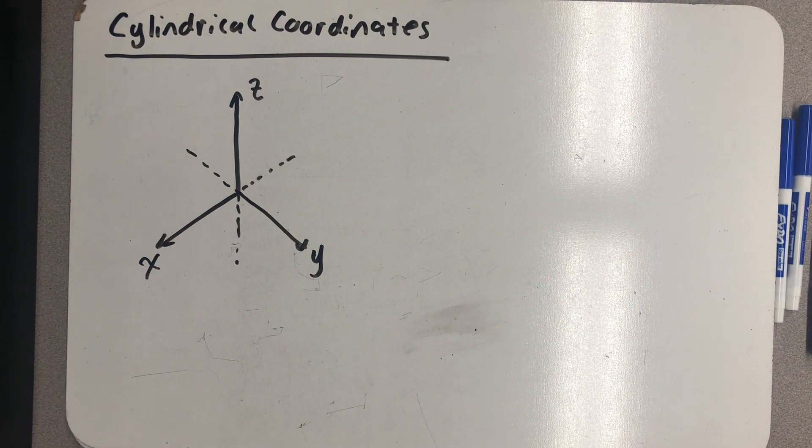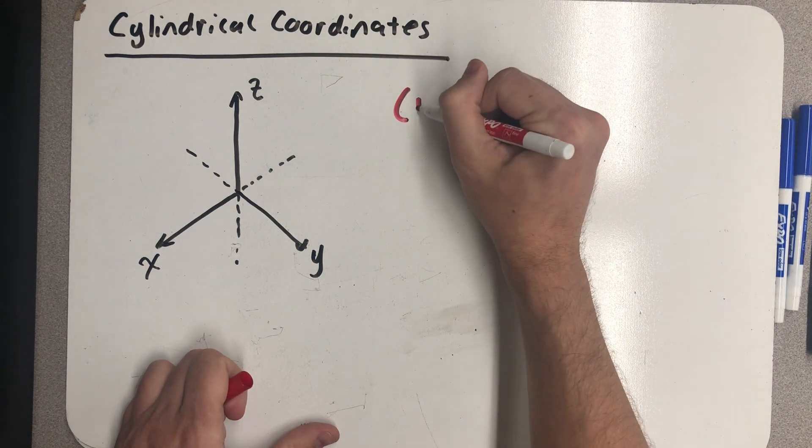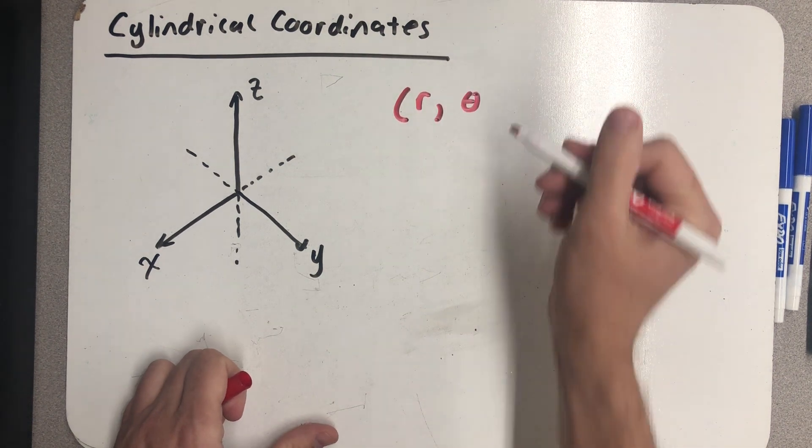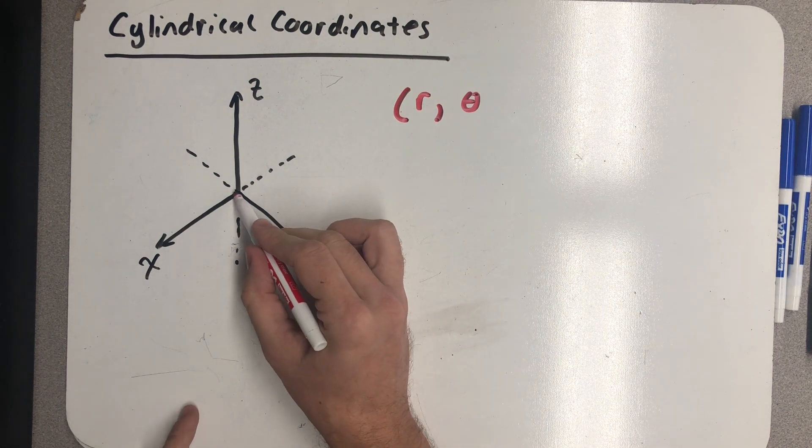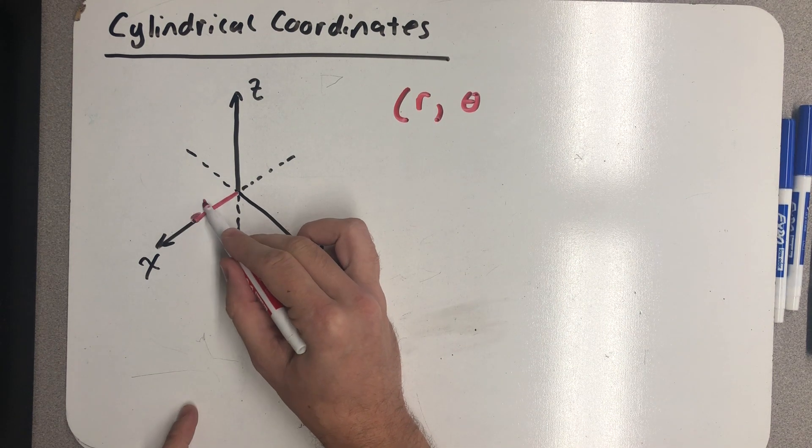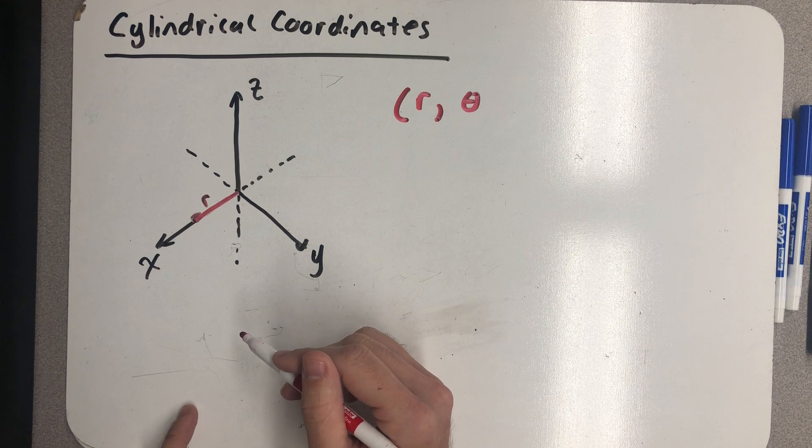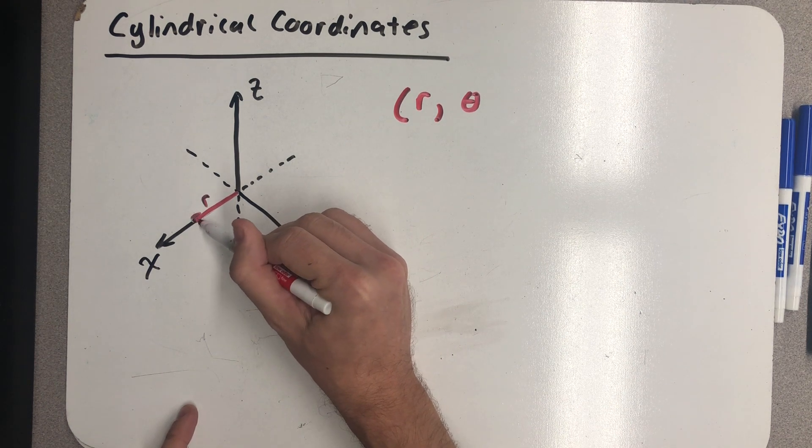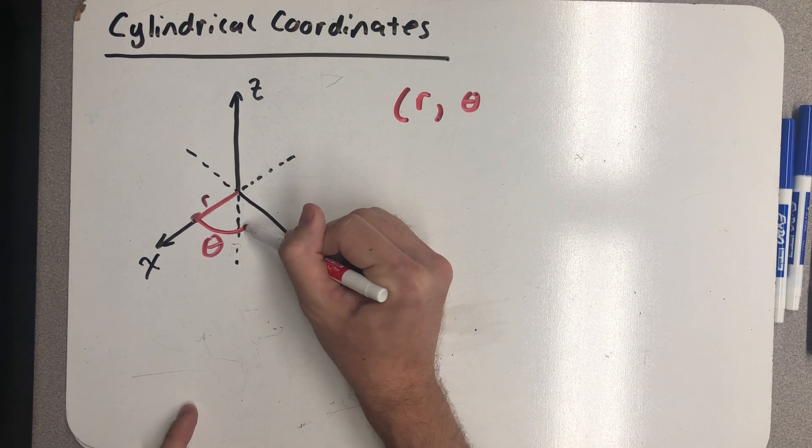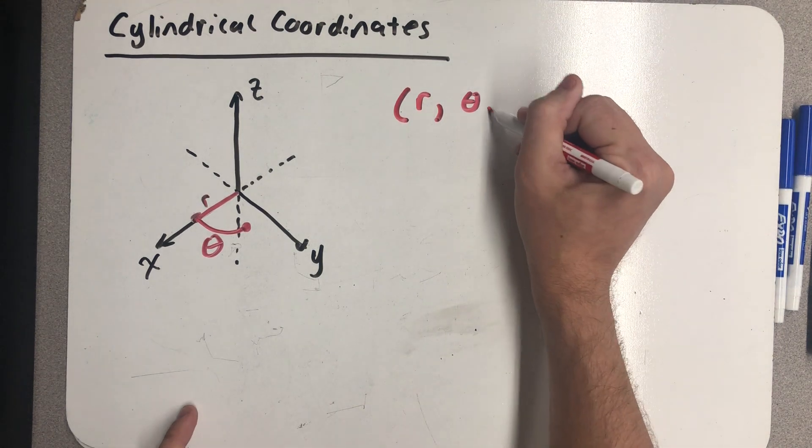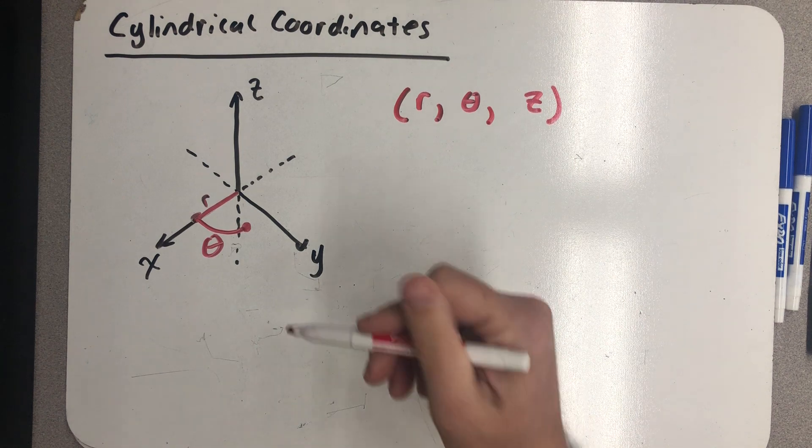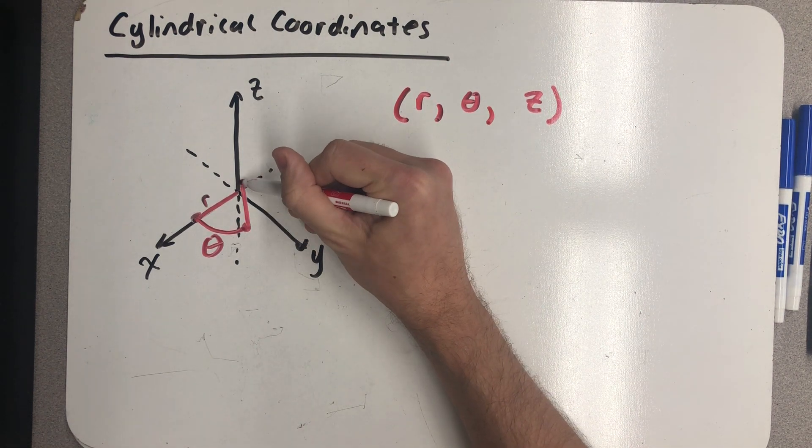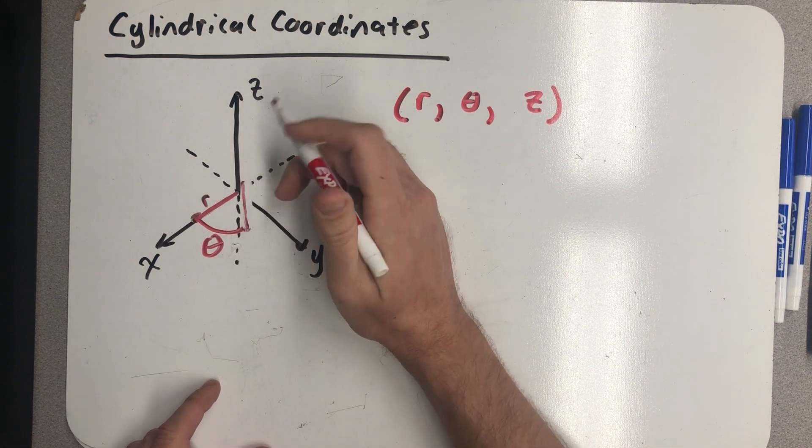I want to imagine that instead the xy plane is a polar plane and we can identify points in the xy plane the same way we usually do with some distance away from the origin r and then we rotate through an angle theta and that would identify a point in the xy plane. If I add to that a z, that is truly just a z coordinate, I would have what we call a cylindrical coordinate.